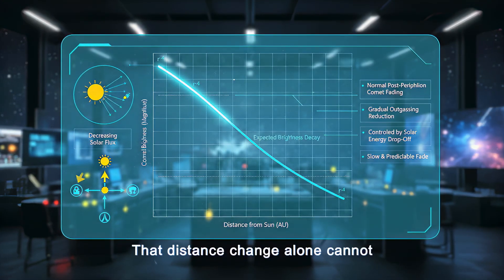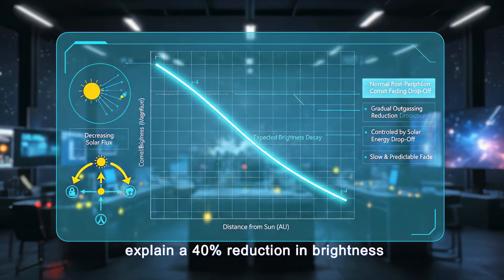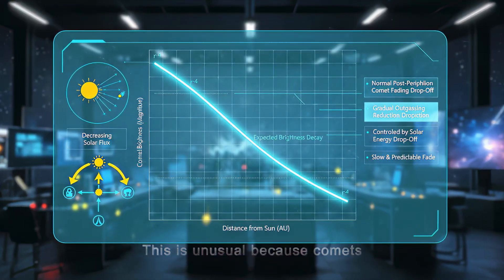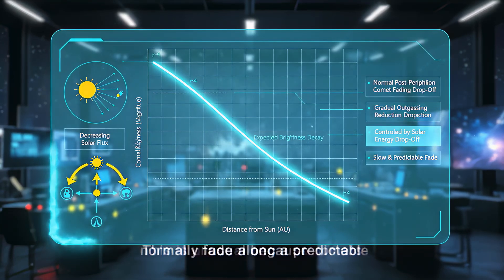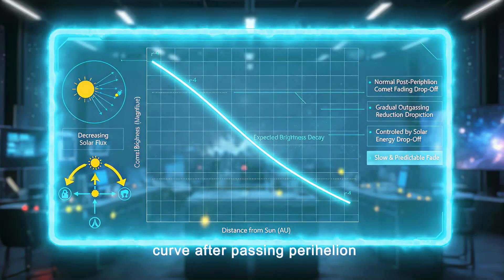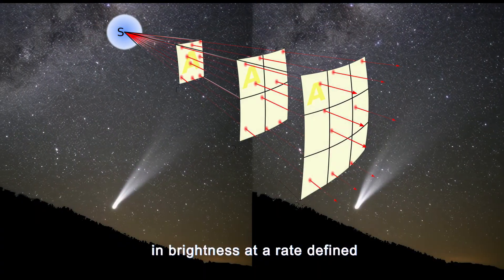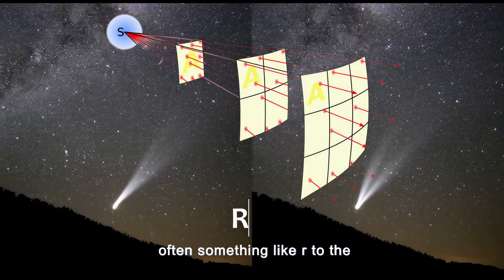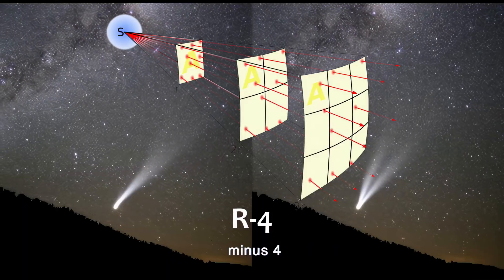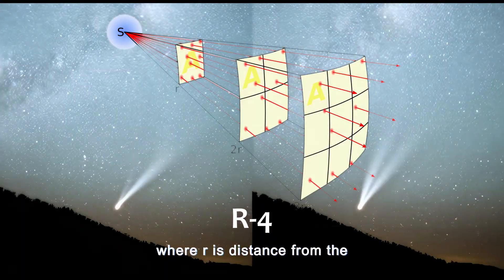But 3i Atlas is only 0.18 astronomical units farther from the Sun than it was last week. That distance change alone cannot explain a 40% reduction in brightness. This is unusual, because comets normally fade along a predictable curve after passing perihelion. Most objects gradually decrease in brightness at a rate defined by a power law, often something like r to the minus 4, where r is distance from the Sun.